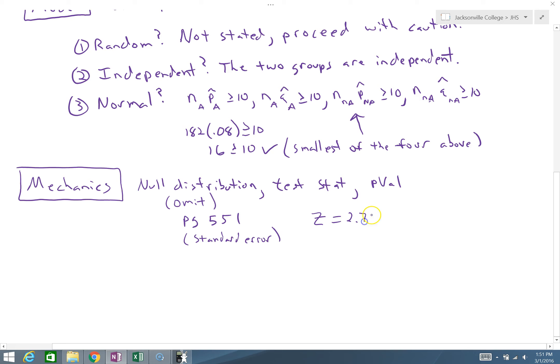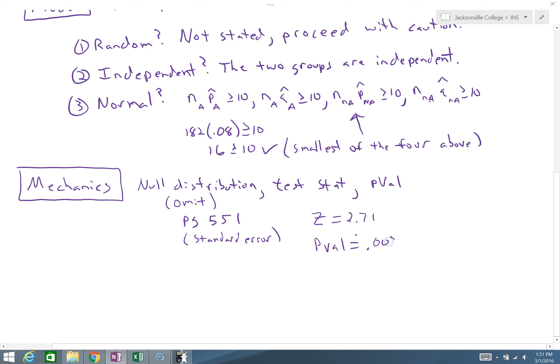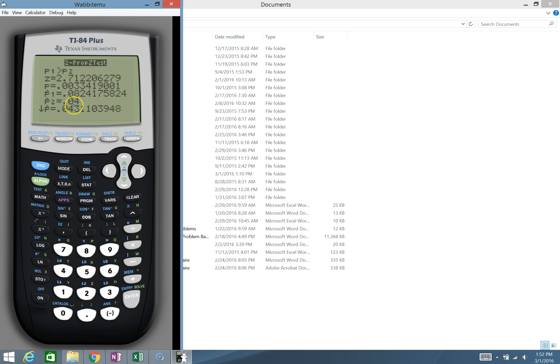Our test statistic is 2.71. That's a lot of standard deviations out there. And the associated p-value is going to be pretty low, 0.003. We see that is our first p-hat, 8%. Our second p-hat, 4%. And then our total p-hat, this is the combined, the pooled p-hat, 0.043% if it was treated as one sample like we did with the pennies example.